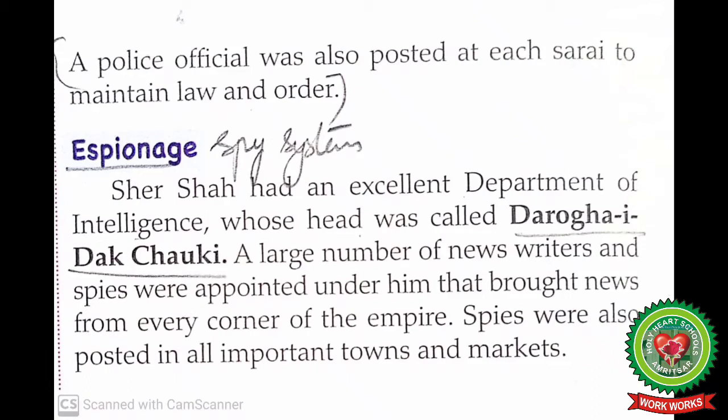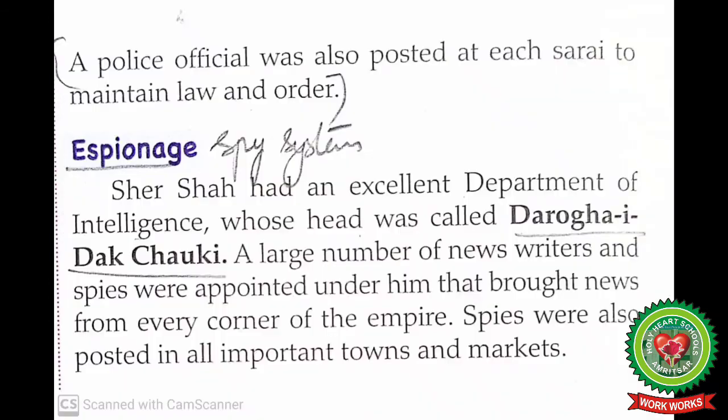Espionage means the spy system. Sher Shah's efficient administrative system largely depended upon his well-organized spy system. The king kept himself posted with the minutest happenings in his kingdom. His department of intelligence was headed by the Raqib-e-Dak-Chowky. A large number of news writers and spies — jasus — were appointed under him, bringing news from every corner of the empire. The spies were kept at all important places and affairs.